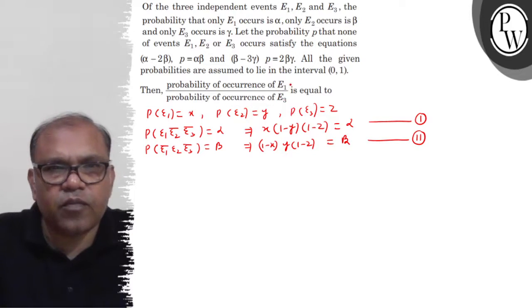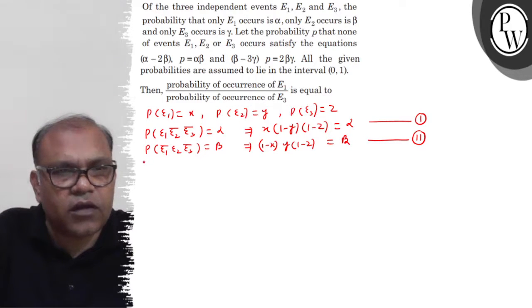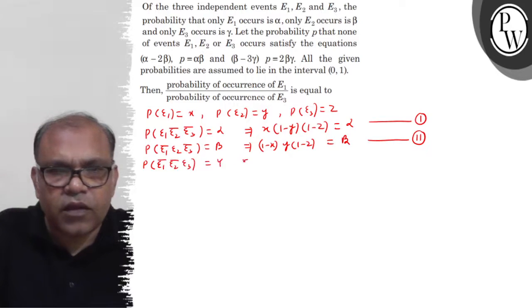Agla information hai. P(E3) equals gamma. The probability only E3 occurs. It means E1 not, E2 not, E3. This equals gamma. This implies (1 minus X) into (1 minus Y) into Z equals gamma.